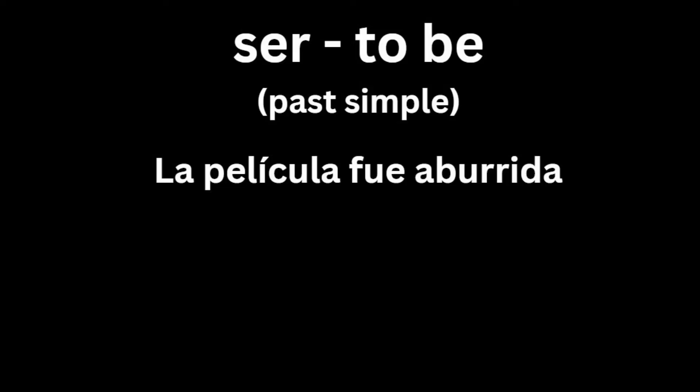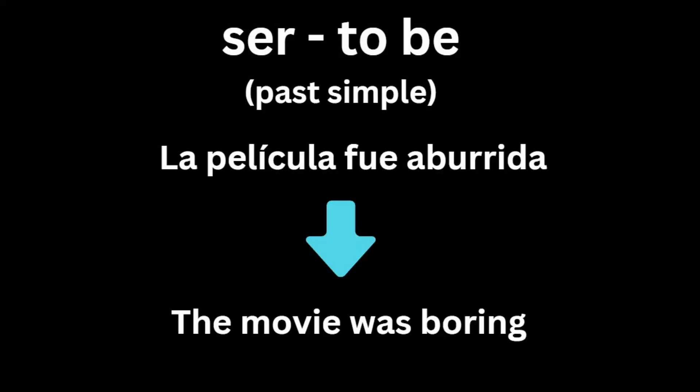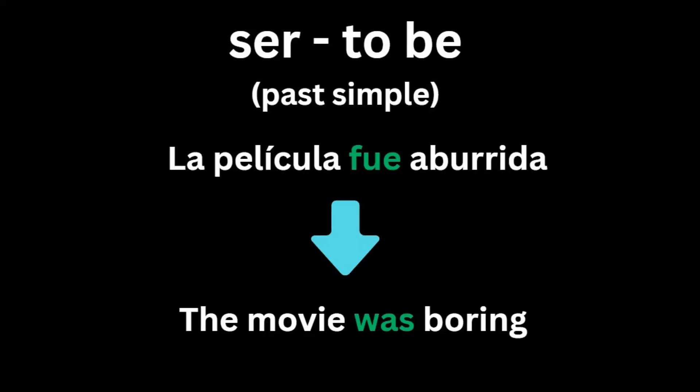Suppose we have the phrase la película fue aburrida, meaning the movie was boring. In this case, we have the use of fue, which indicates was, as in the movie was boring. Since a movie is an event that happened in the past and stayed in the past, the act of the sentence remains factual because of how the movie was. And since there is the word fue in the sentence, this shows you how fue is used more than the other conjugations of ser.